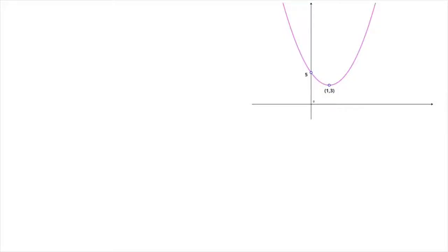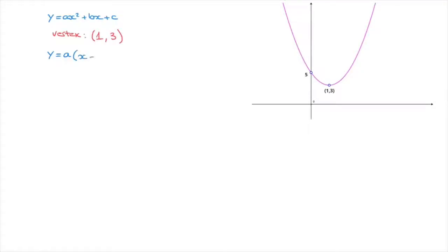Since we know this is a parabola, it has an equation that can be written y equals a times x squared plus bx plus c. We also know that this parabola's vertex has coordinates 1 and 3. Using these coordinates, we can rewrite this parabola's equation as y equals a times (x minus 1) squared plus 3, where the 1 being subtracted corresponds to the x-coordinate of the vertex, and the 3 added at the end corresponds to the y-coordinate of the vertex.